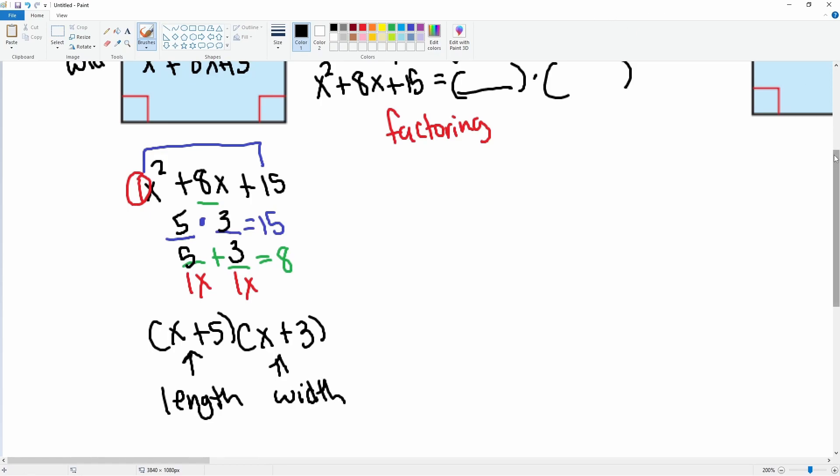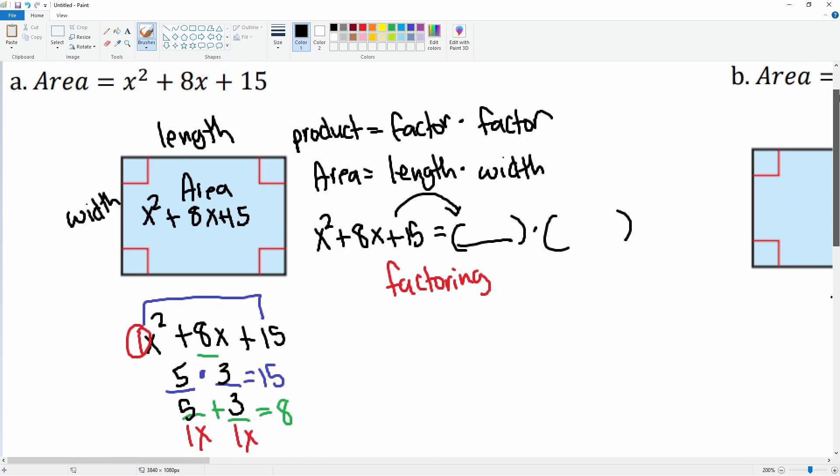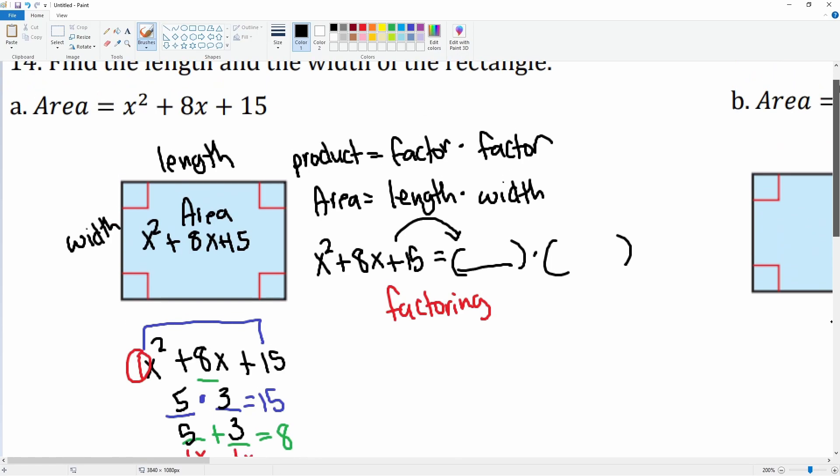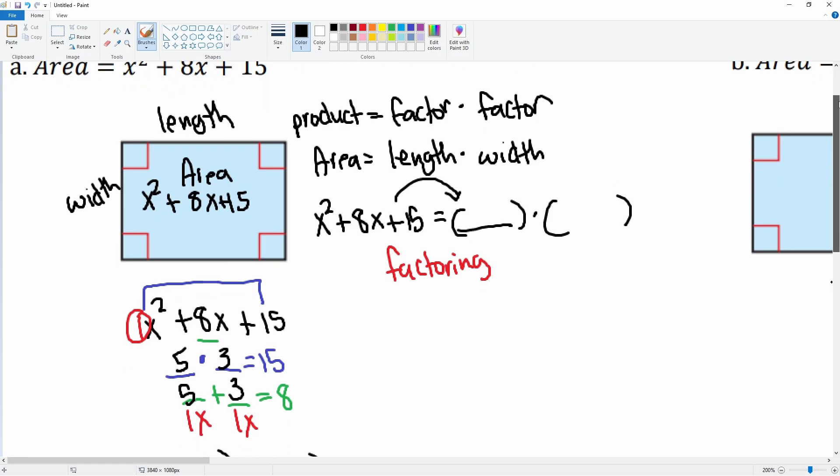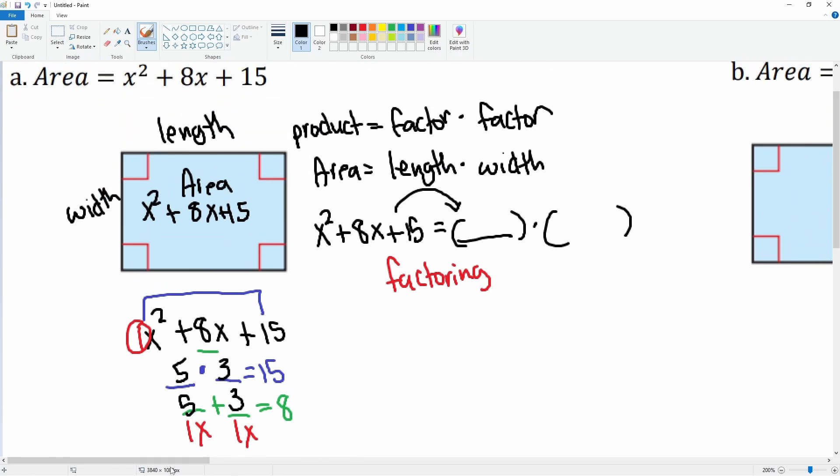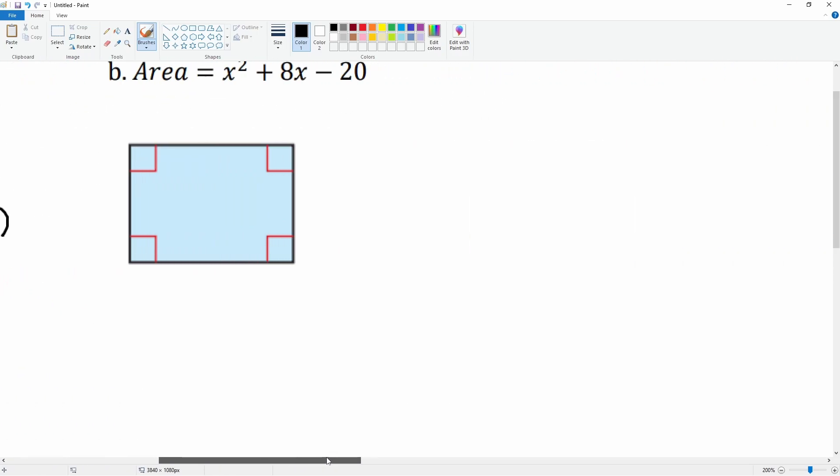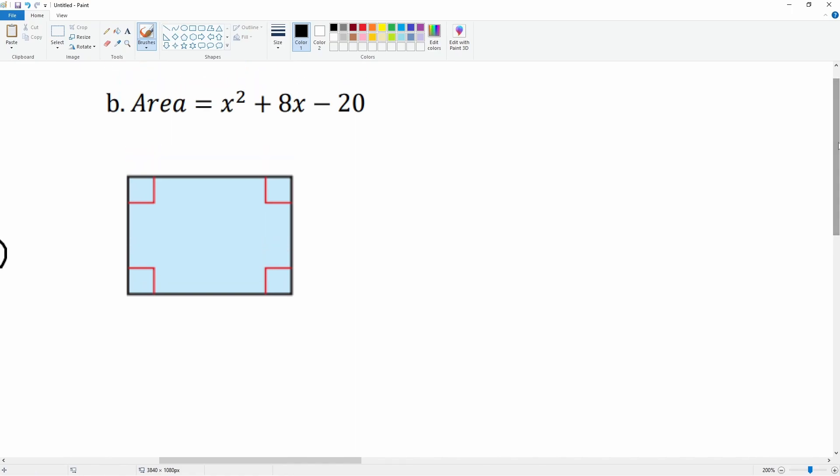There you go. So to find the length and the width, all you have to do is factor the area. Here's part b—you can try this. It's the same process. We know that the area is x² + 8x - 20.